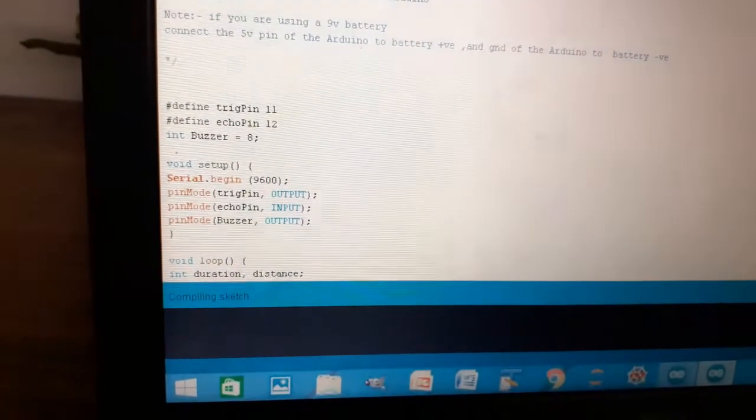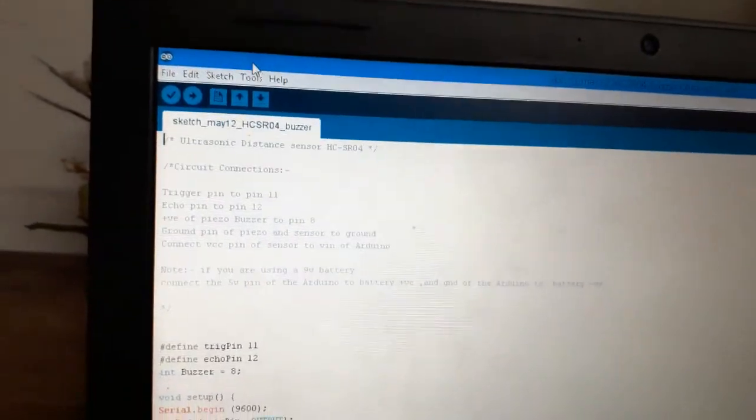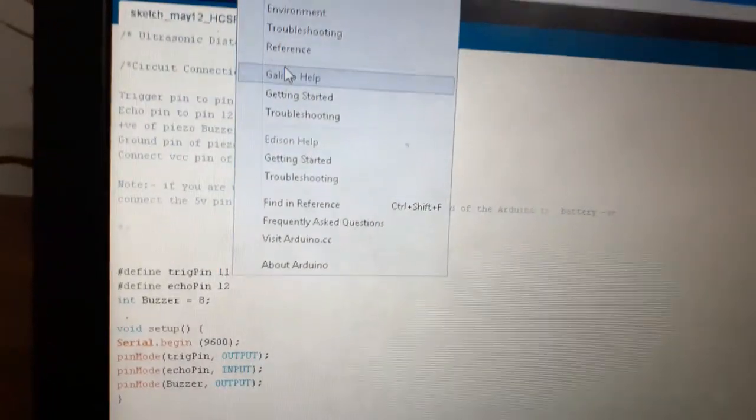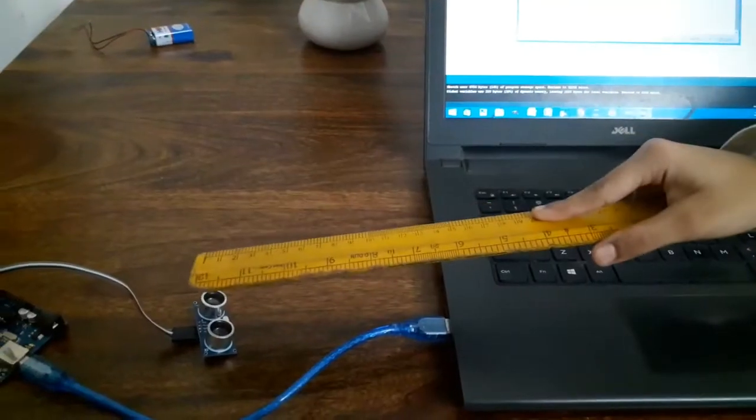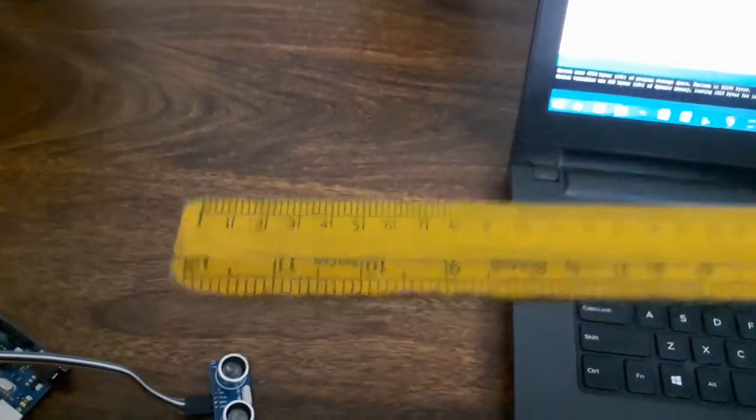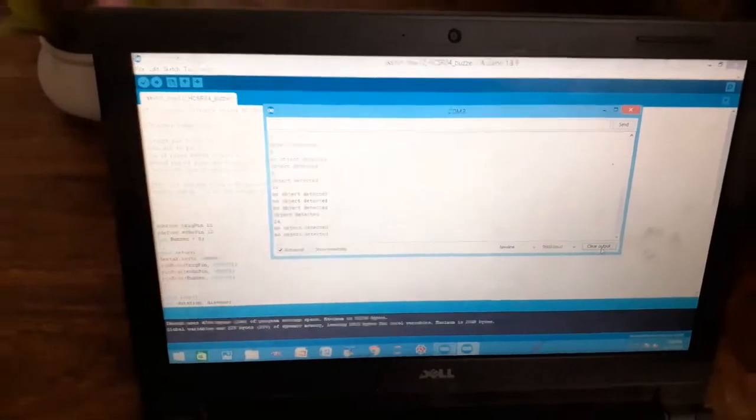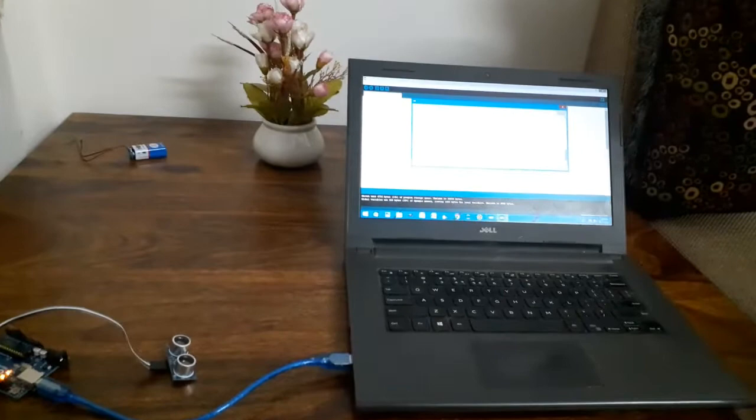Now let us run the program. As you can see, it is getting loaded. Done uploading. And now open your serial monitor from tools. Now I am holding this object closer to the buzzer. As you can see, it mentions 5 cm. Now away, it mentions 20. Even further, 24. If I hold it more than 30, then the object will not be detected. This is how to find out the distance of the object from the sensor.